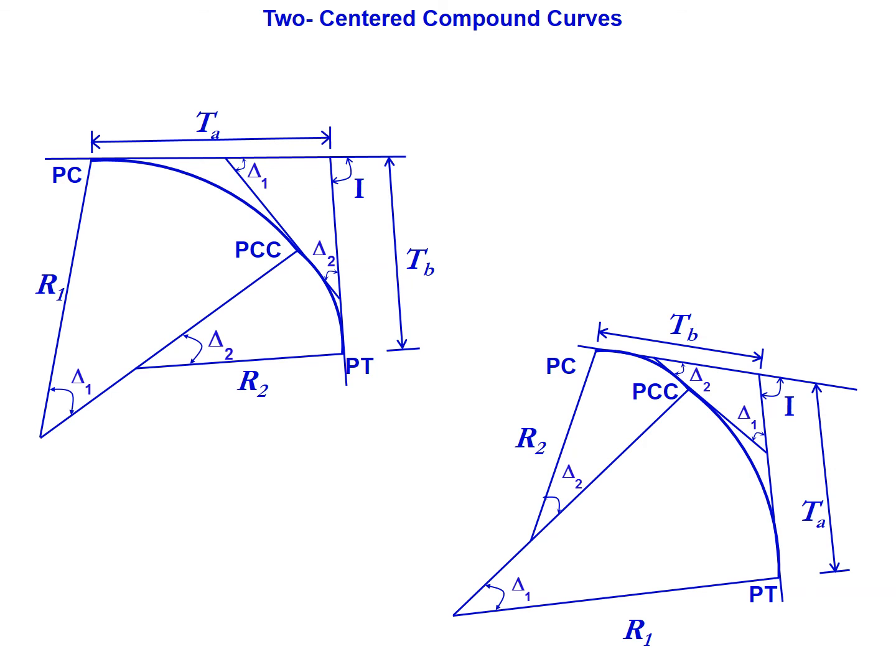In the other case, we have the larger curve second or closer to the PT, so T sub B is the tangent length of interest. If we're starting with the point of intersection station, we're going to subtract off T sub B to reach the PC, then add the length of curve two (L2) to reach the PCC, and then add L1 to reach the PT.